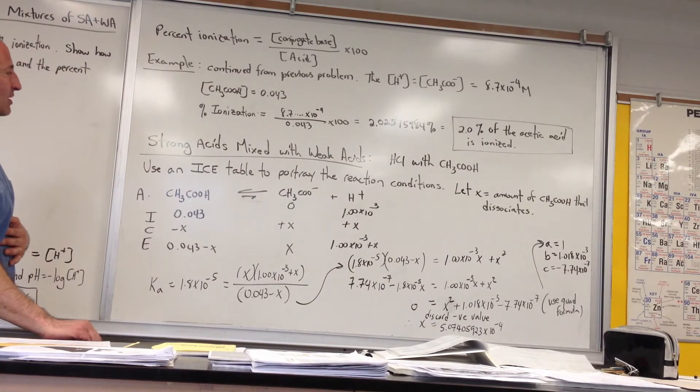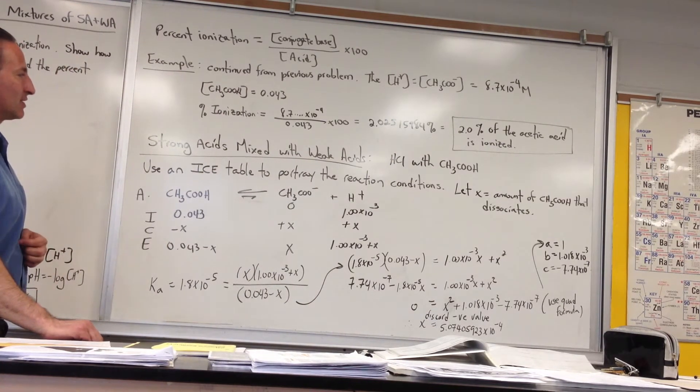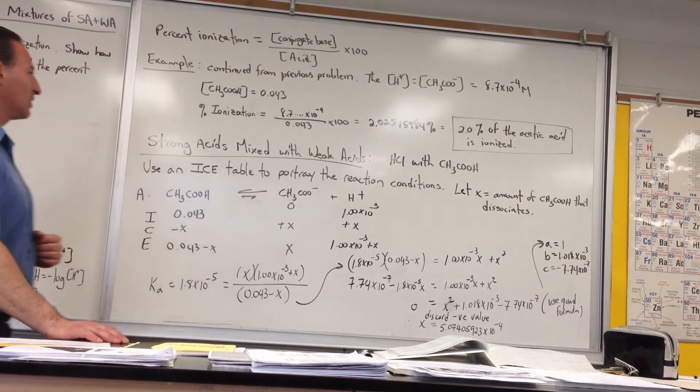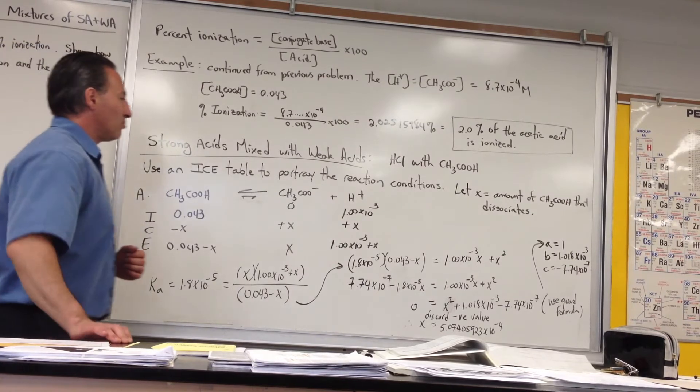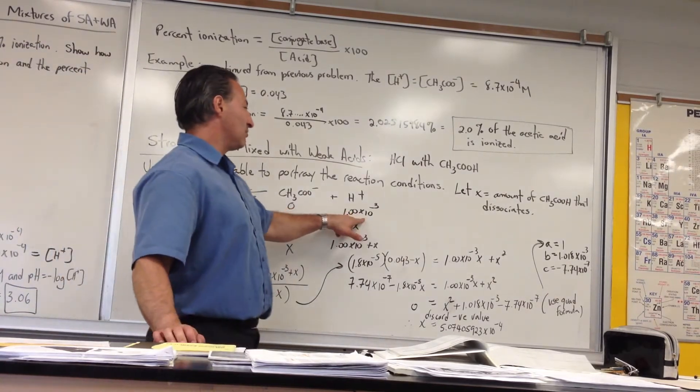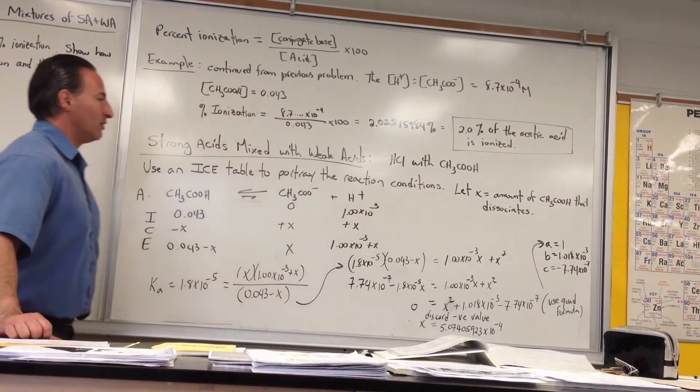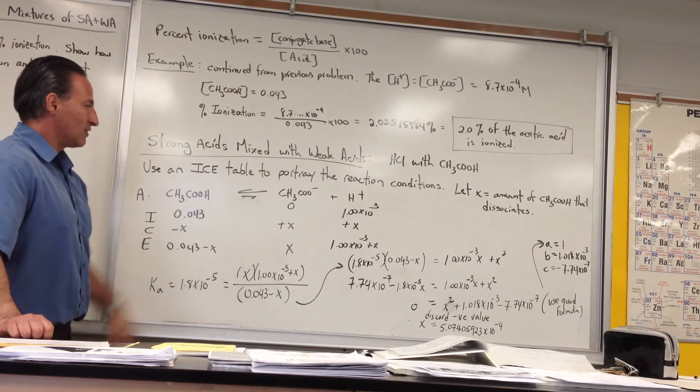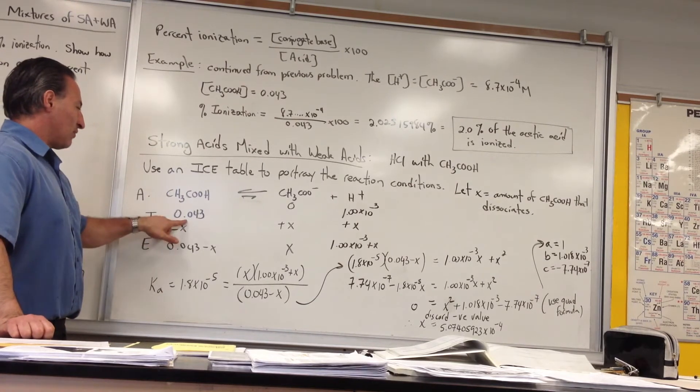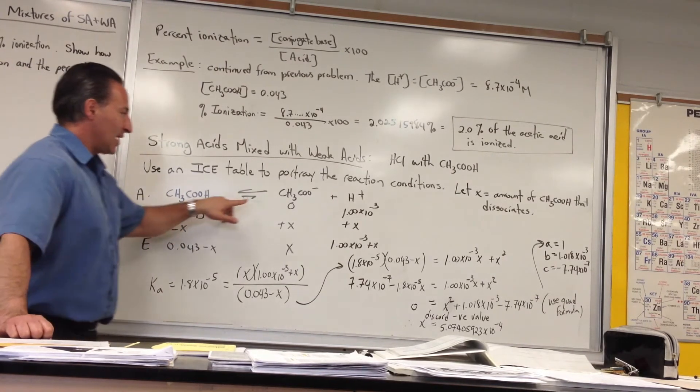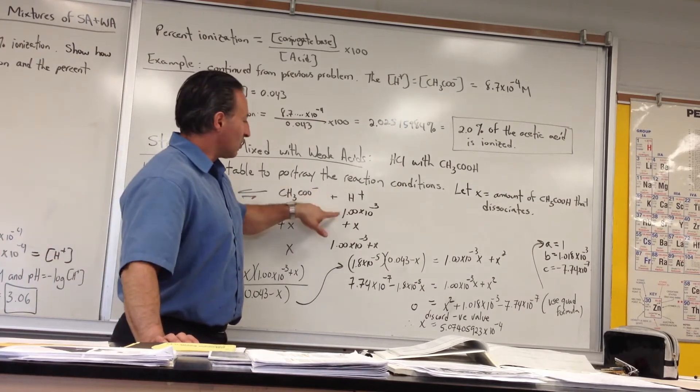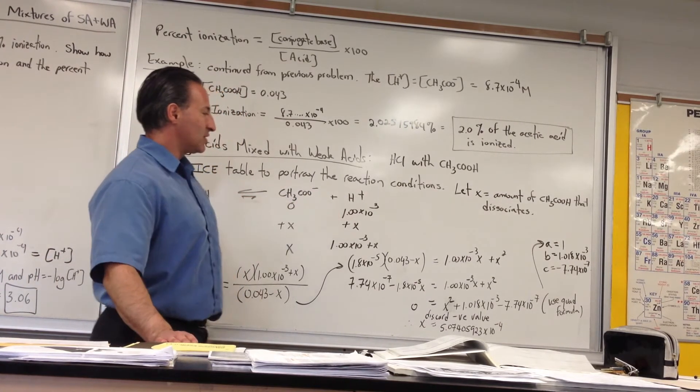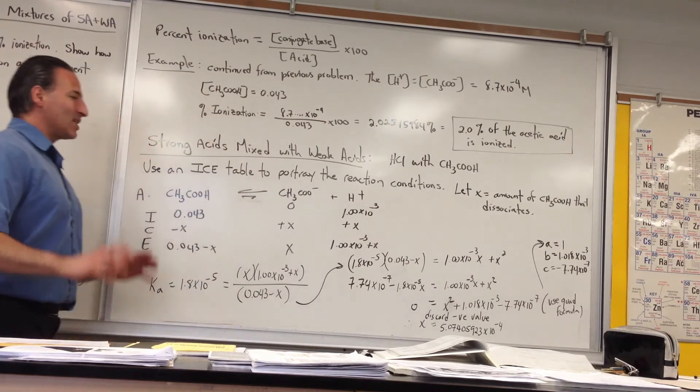Now let's see what happens if we mix a strong acid like hydrochloric acid under the same conditions. We're going to have the same amount of acetic acid present, but now we're going to add 1.0×10⁻³ moles per liter of hydrochloric acid. So we set up the same ICE table showing the dissociation of acetic acid. It starts off at 0.043.